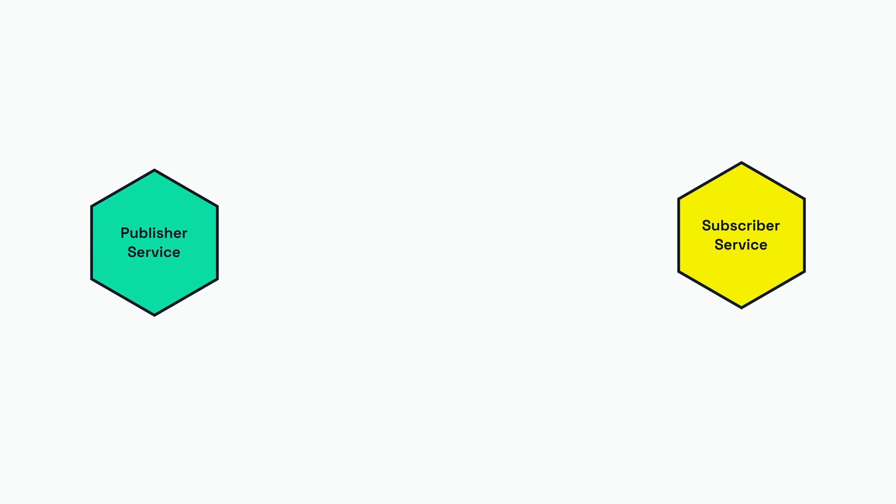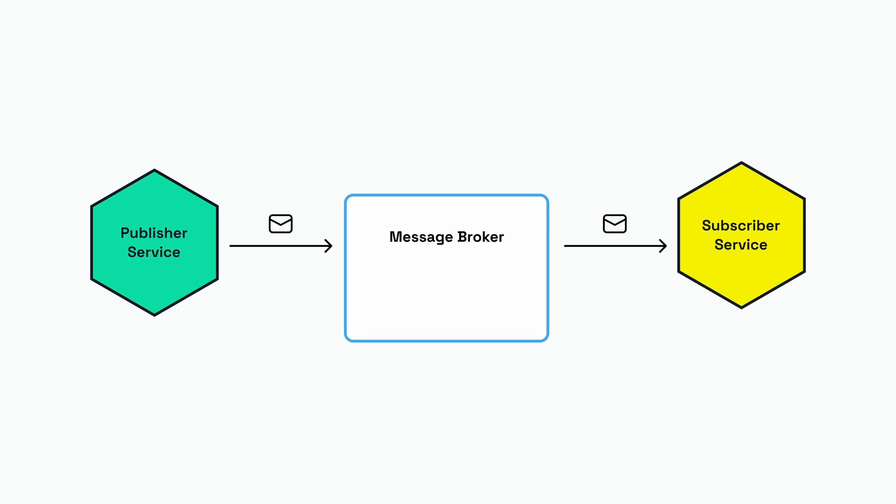The publisher service and subscriber service don't know of each other's existence — they are not coupled — so there needs to be a third party in between, and this is a message broker. The publisher service will send a message to the message broker, and the message broker will forward this message to any subscriber services.